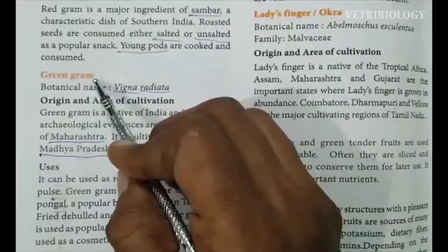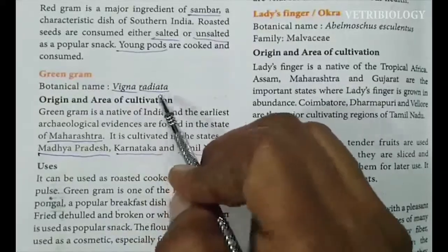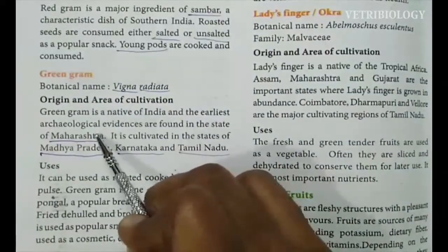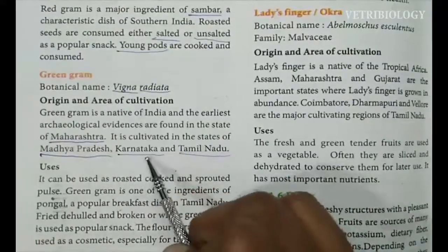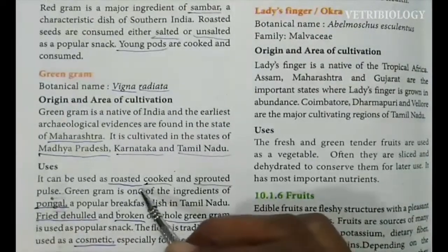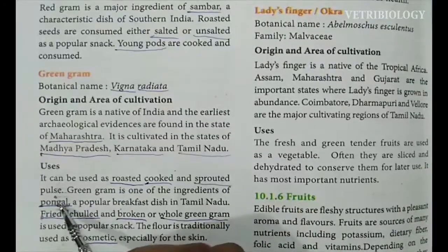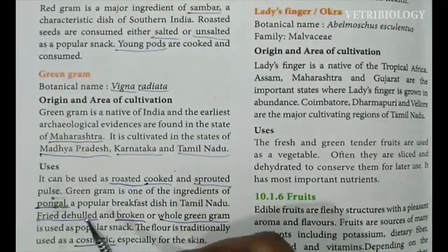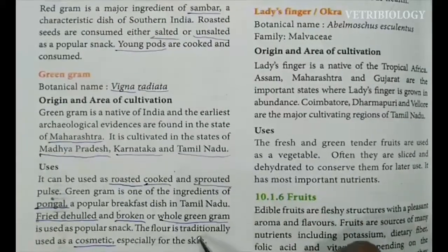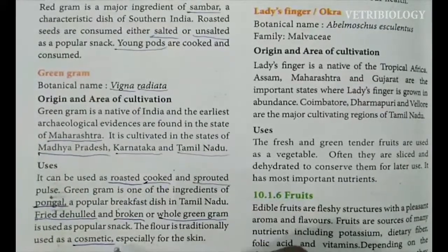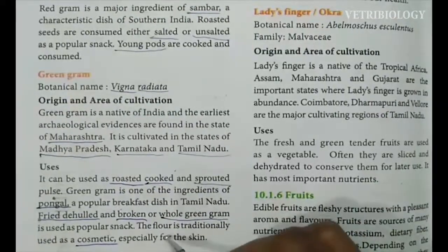Next one is green gram, that is paasi payiru in Tamil. Its botanical name is Vigna radiata. It is cultivated in Maharashtra, Madhya Pradesh, Karnataka and Tamil Nadu. Green gram is cooked whole, sprouted, or ground into flour to make pongal. It is also traditionally used as a cosmetic for skin care.